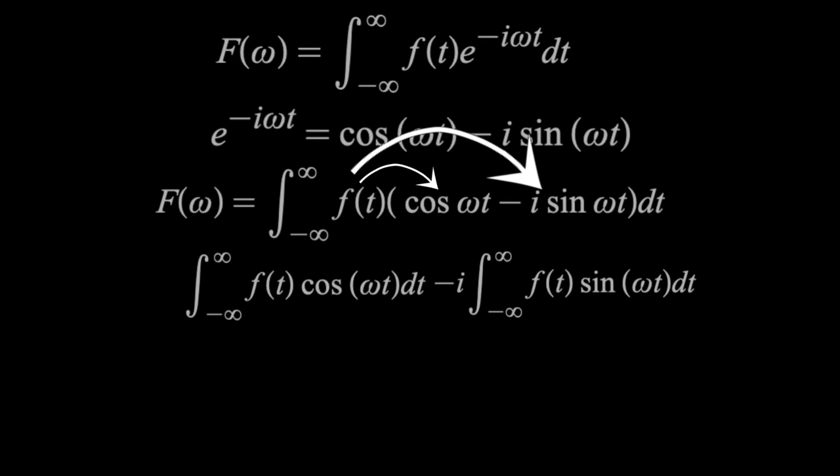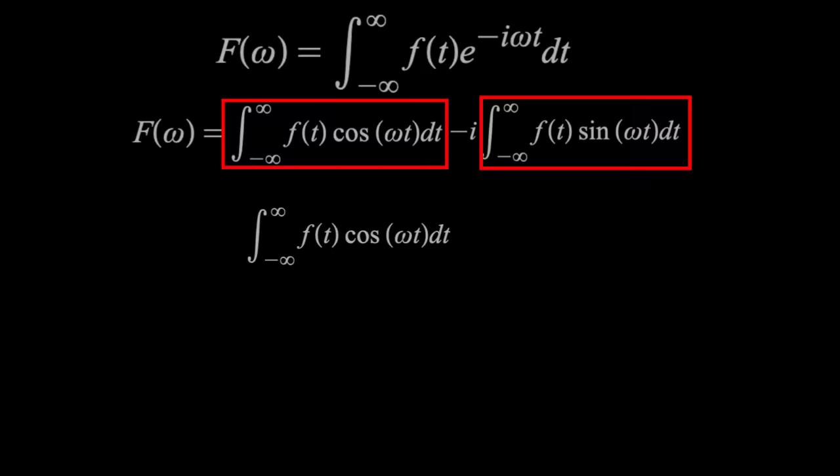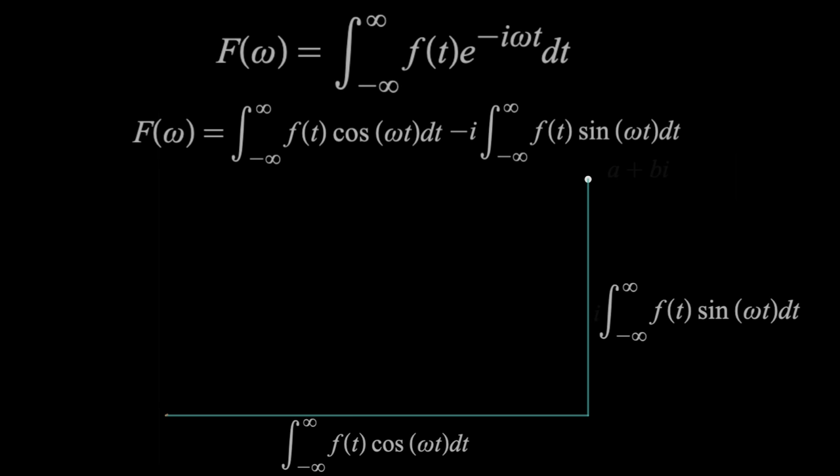So how can we visually understand this equation? Just take your function and multiply it by a cosine and sine curve, both with the same arbitrary angular frequency. Then find the area under both those curves, which is what the integral tells us. Those areas represent the real and imaginary component respectively of some complex number, since i is multiplied by one of those terms. The magnitude of that number is the magnitude of the Fourier transform at that specific omega, and the angle is the phase.